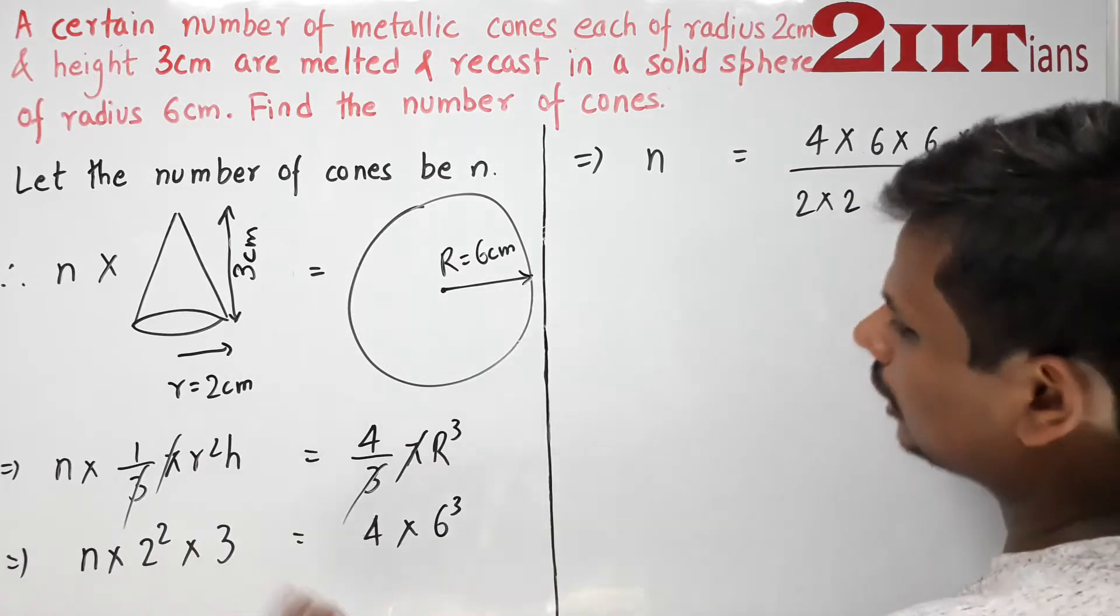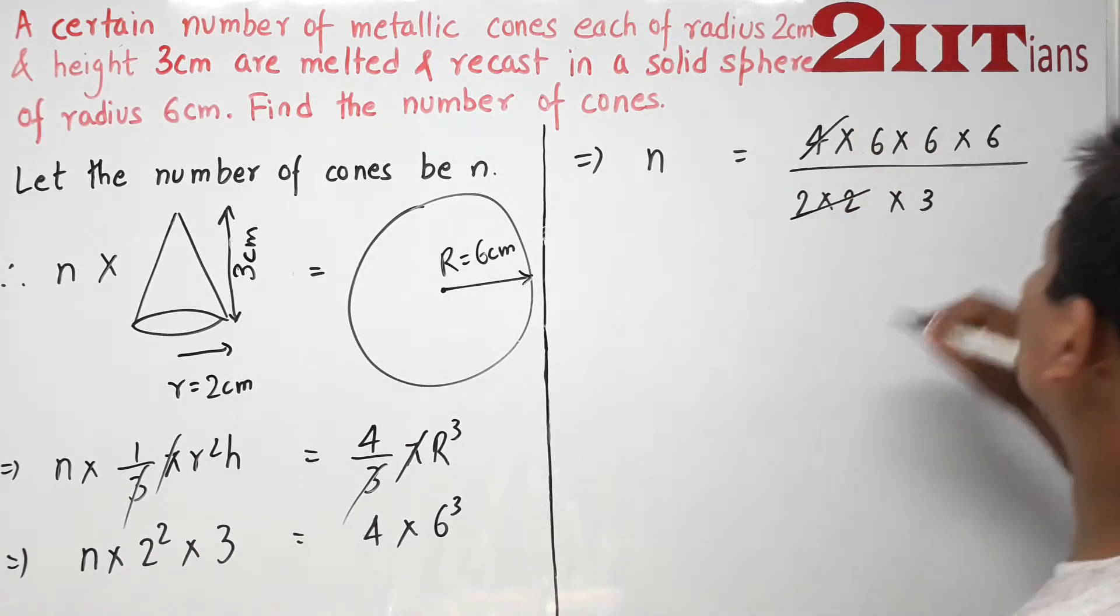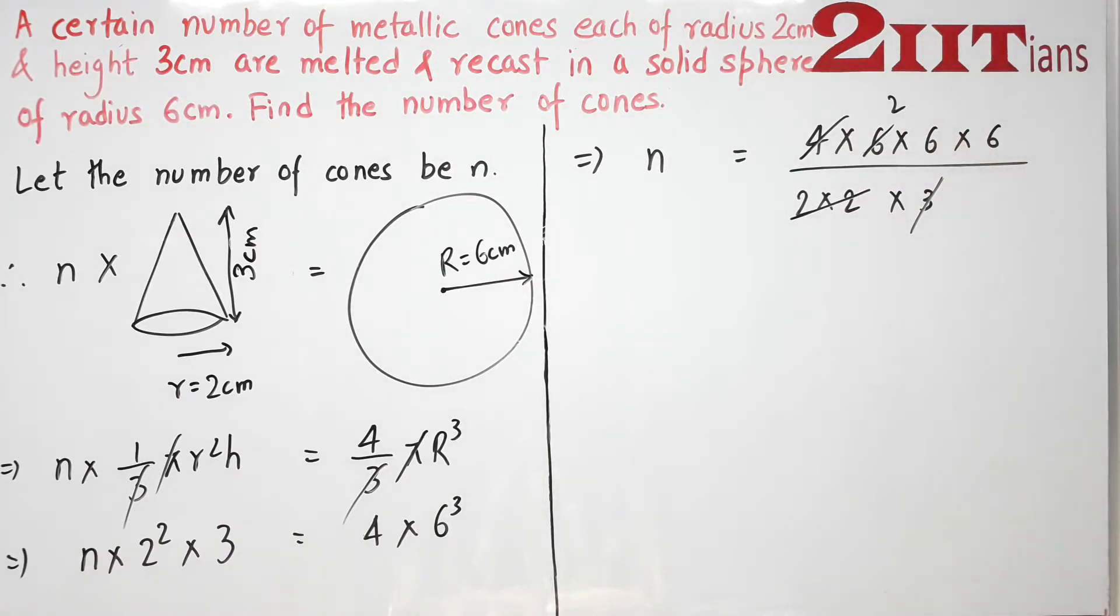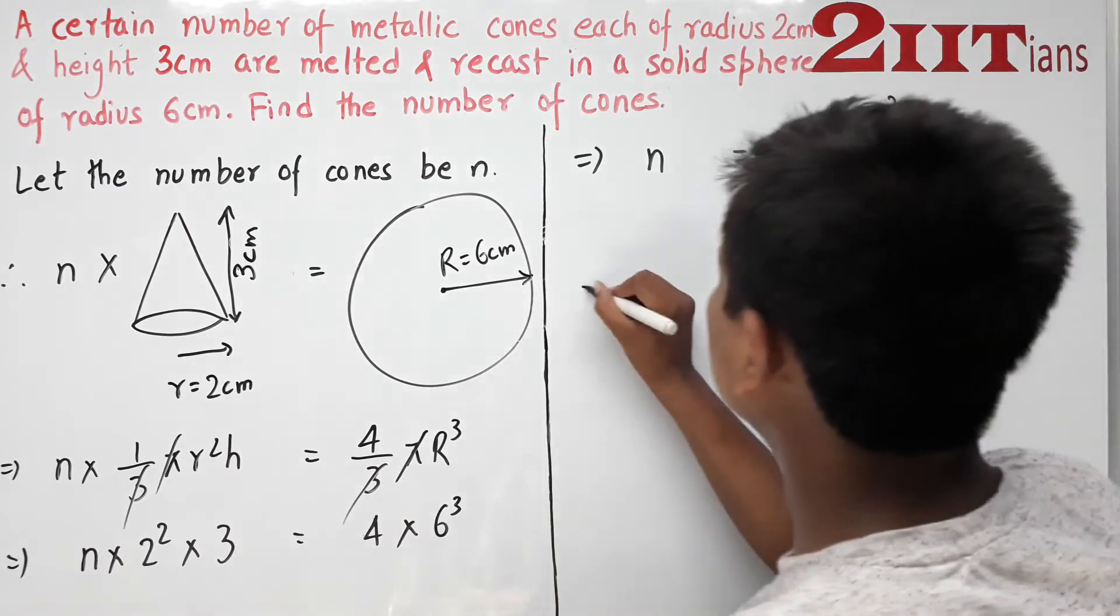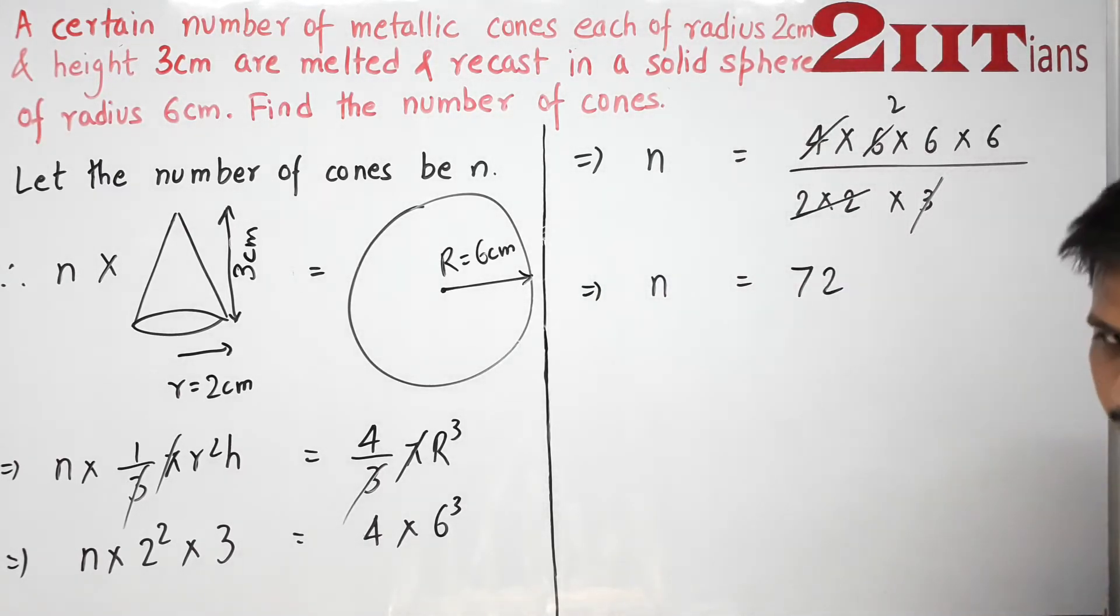So that's 4 times 6 times 6 times 6 divided by 2 times 2 times 3. Two times two is 4 and three times two is 6, so 36 times 2 gives us n equals 72.